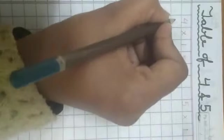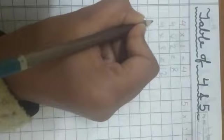Now table of 4 and 5. 4 1's are 4. 4 2's are 8. 4 3's are 12. 4 4's are 16. 4 5's are 20.